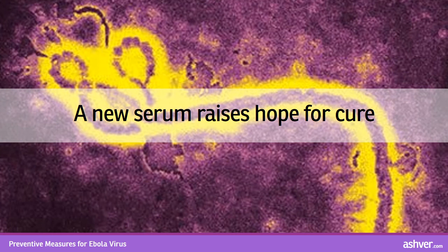A new serum raises hope for a cure. An experimental serum known as ZMapp, which had only been previously tested on monkeys, is a ray of hope for treating the dangerous virus. ZMapp is one of a new class of drugs called monoclonal antibodies that use uniquely manufactured proteins to prevent the Ebola virus from infecting new cells. This class of drugs has also been used successfully to treat certain cancers.